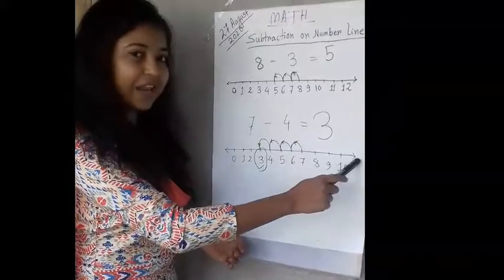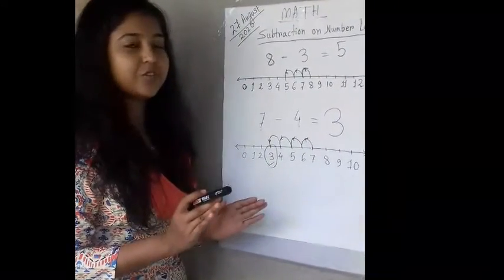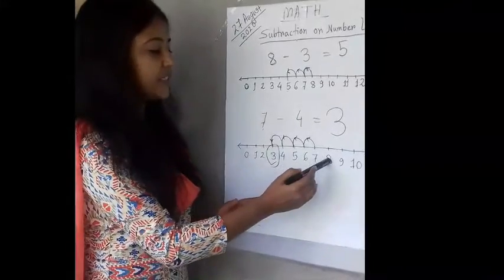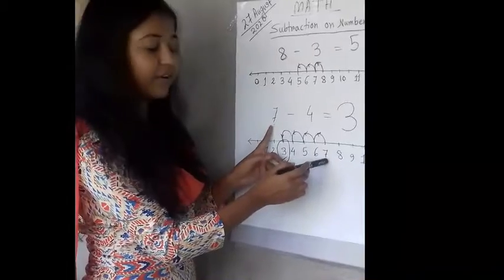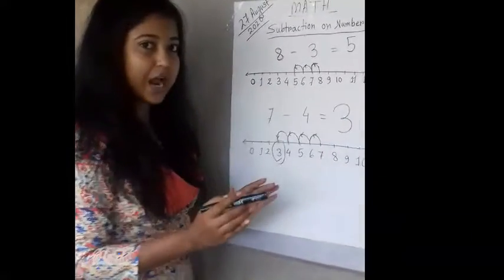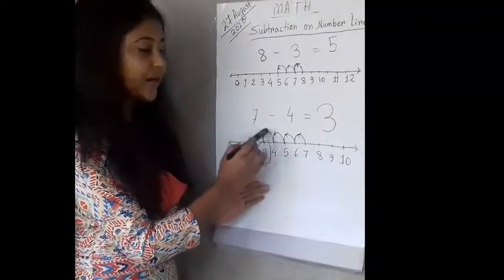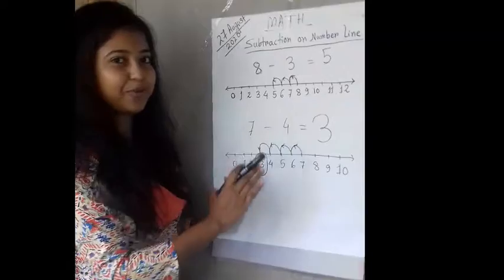First you will draw a line. Then you will put the numbers. Then how much you have to subtract? You will start from first number and you will count backwards. See? I have started here from 7. And here I have started from 8. So you have to start from first number. And how much you have to count? Number 3 or number 4 you have to count.